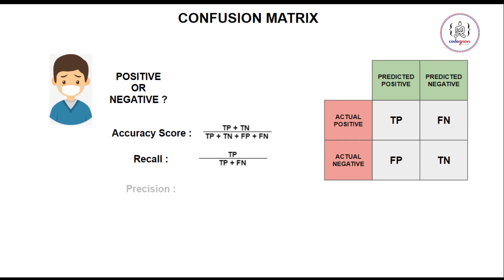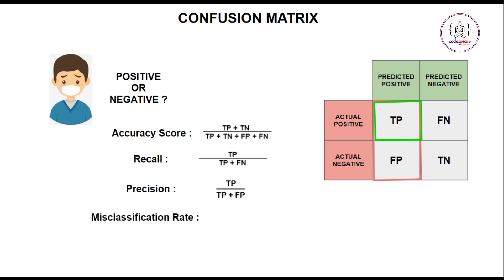Now we have something called precision. Out of all the predicted positive classes, how many are actually positive? Predicted positive is true positive plus false positive. Precision is true positive divided by true positive plus false positive. Then we have the misclassification rate, which is given by 1 minus accuracy score.